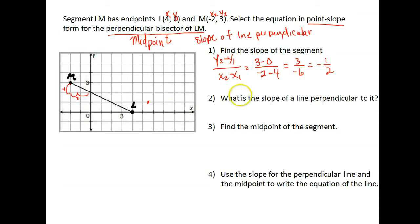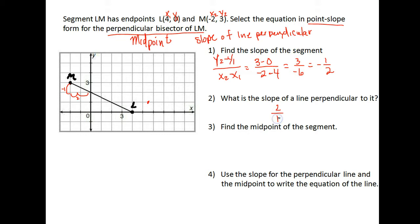Now that we have the slope of the line they gave us, we need the slope of the line perpendicular to that. For a perpendicular line, you flip the slope — so instead of 1 over 2, it's 2 over 1 — and you use the opposite sign. This was negative, so our perpendicular slope is going to be positive. So positive 2 over 1, or just 2. That's the slope we're going to use.